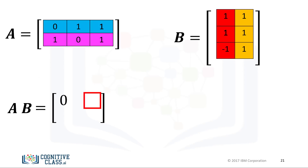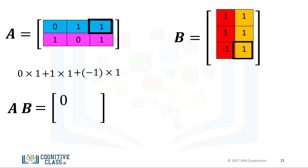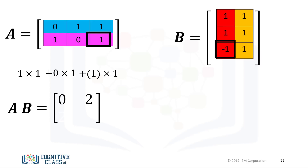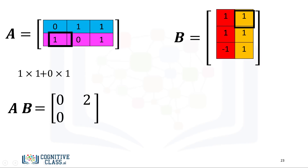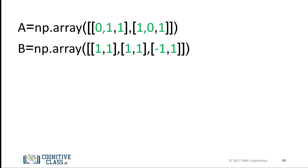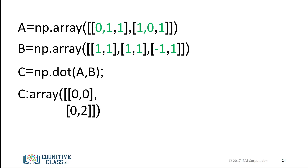For the first row and the second column of the new matrix, we take the dot product of the first row of matrix A with the second column of matrix B. The result is zero. For the second row and second column, we take the dot product of the second row of matrix A with the second column of matrix B. The result is 2. In NumPy, we can define the arrays A and B, perform matrix multiplication, and assign it to array C. The result corresponds to the matrix multiplication of arrays A and B.